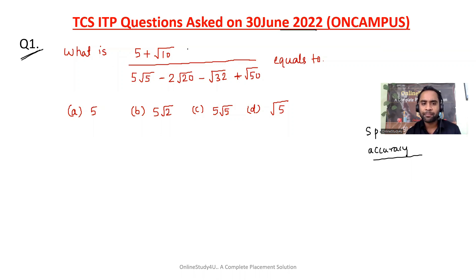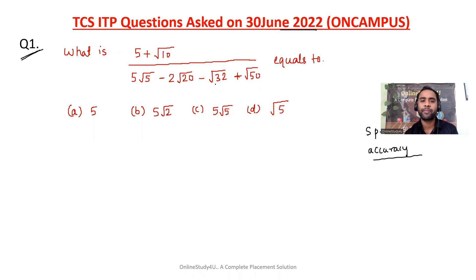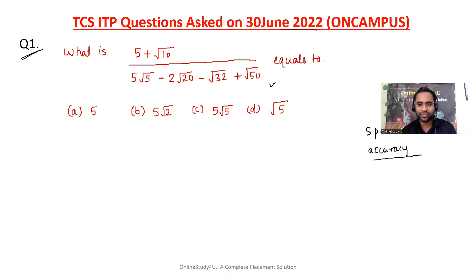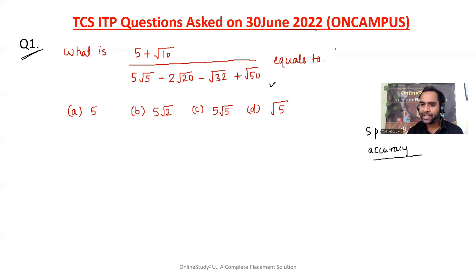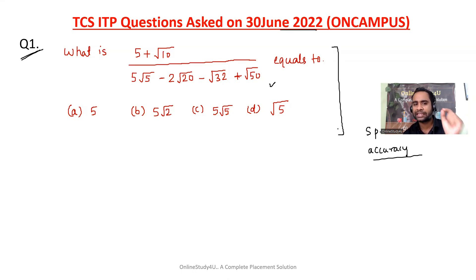What is (5 + √10) divided by (5√5 − 2√20 − √32 + √50)? Now after seeing this question many of you will not try to attempt it, but aptitude is simple — the only thing is you have to think a bit.